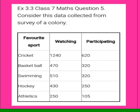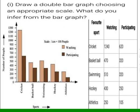Question number 5: consider data collected from a survey of a colony. We draw a double bar graph where the x-axis represents different sports — cricket, basketball, swimming, hockey, and athletics — and the y-axis uses a scale of 1 cm = 100 people. Two colors differentiate the bars: light brown for the number of people watching and dark brown for the number of people participating in each sport.